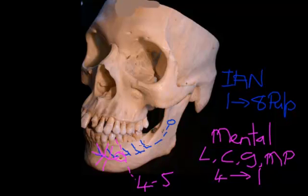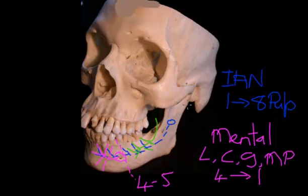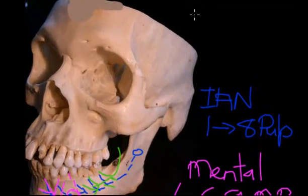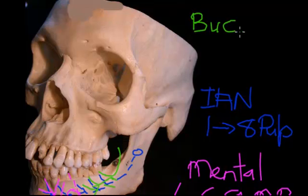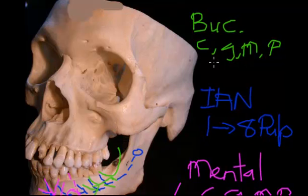The question that we're left with is: what supplies the buccal region around the fives and back to the eights? Well, that's our old friend the buccal branch of the mandibular division of trigeminal. It runs across the retromolar pad and then spreads out to supply this region here. That's called the buccal nerve, and it is sensory to the cheek, the gingiva, the mucosa, and the periodontal ligament from the eight back to around the mental foramen area — approximately the four or five.